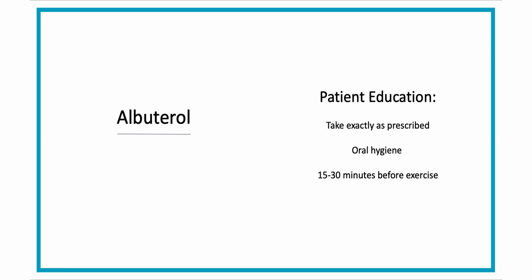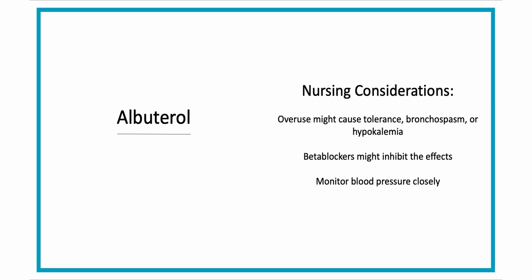If your patient is using albuterol as a preventative, have them take it 15 to 30 minutes before exercise for maximum effectiveness. Key nursing considerations: overuse may lead to tolerance, bronchospasm, or hypokalemia. Beta blockers can also interfere with the therapeutic effects of albuterol because they essentially block stimulation of those beta receptor sites, so monitor blood pressure very closely and watch for widening pulse pressure.